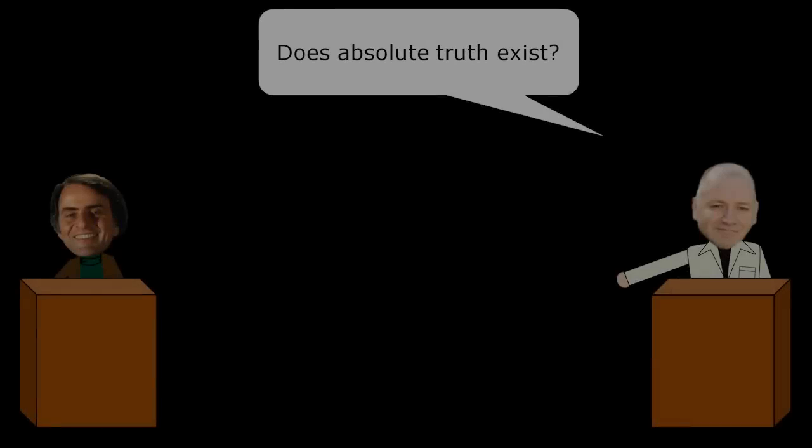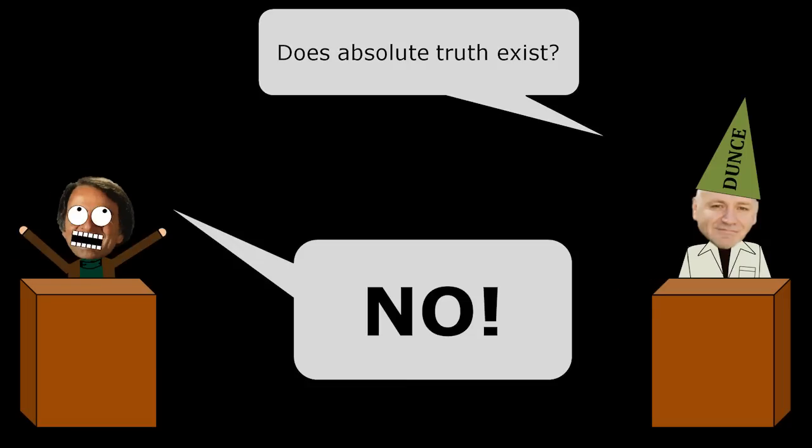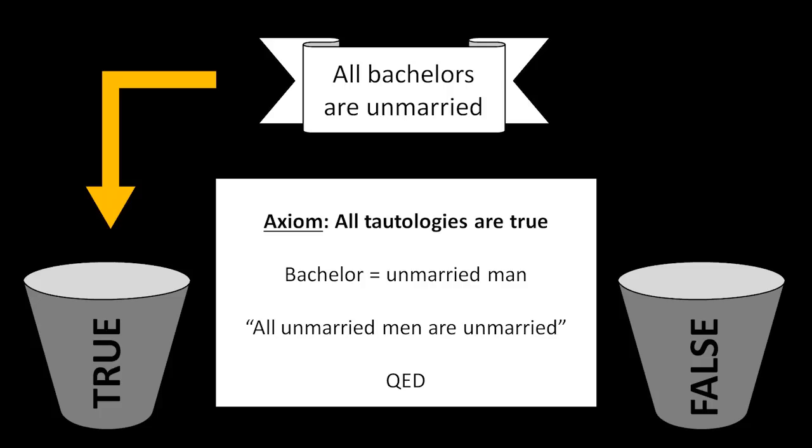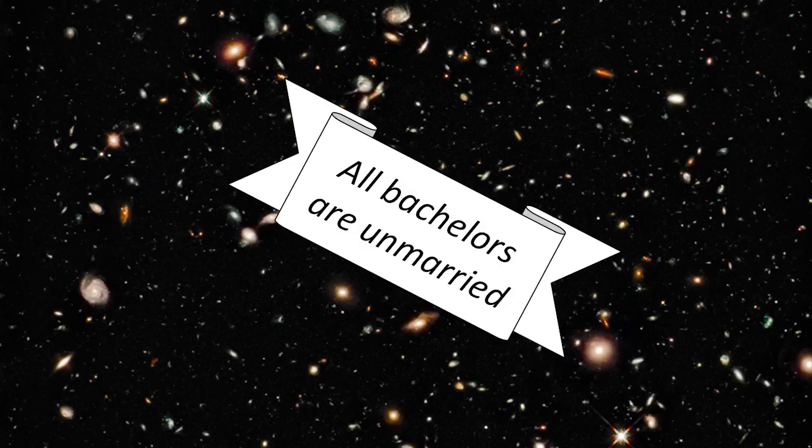So the next time some hack philosopher tries to ask you if absolute truth exists, the answer is obviously no. Because it's one thing for an individual to be absolutely certain of a given proposition in accordance with well-specified rules, but it's another thing entirely for that certainty to transcend all time and space across all linguistic and cultural barriers.